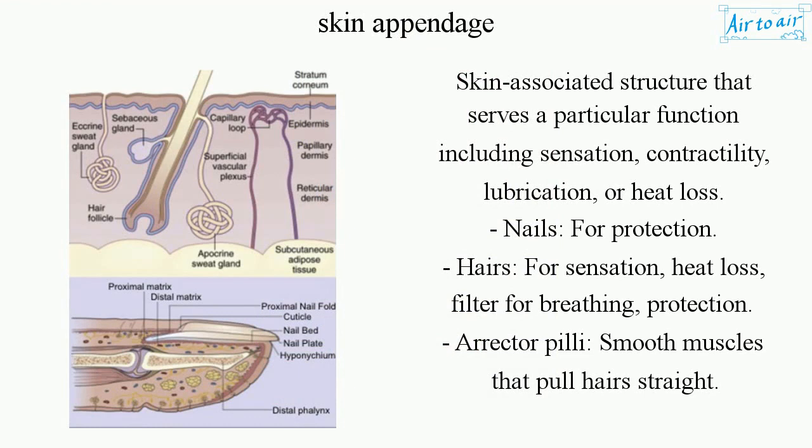Nails for protection. Hairs for sensation, heat loss, filter for breathing, and protection. Arrector pili: smooth muscles that pull hairs straight.